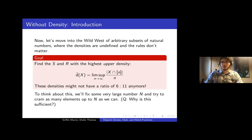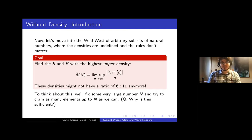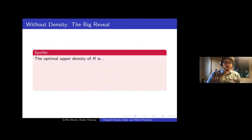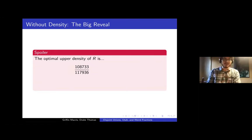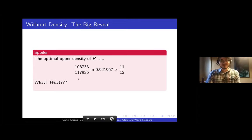We're going to look at the case of R first, and fix some very large number n. We're going to see how many elements up to n we can fit into our set. R — the union S ∪ 2S ∪ 3S — which before could be at most eleven-twelfths, has an optimal upper density which is different and a little bit larger than that. It turns out to be exactly 108,733 over 117,936.